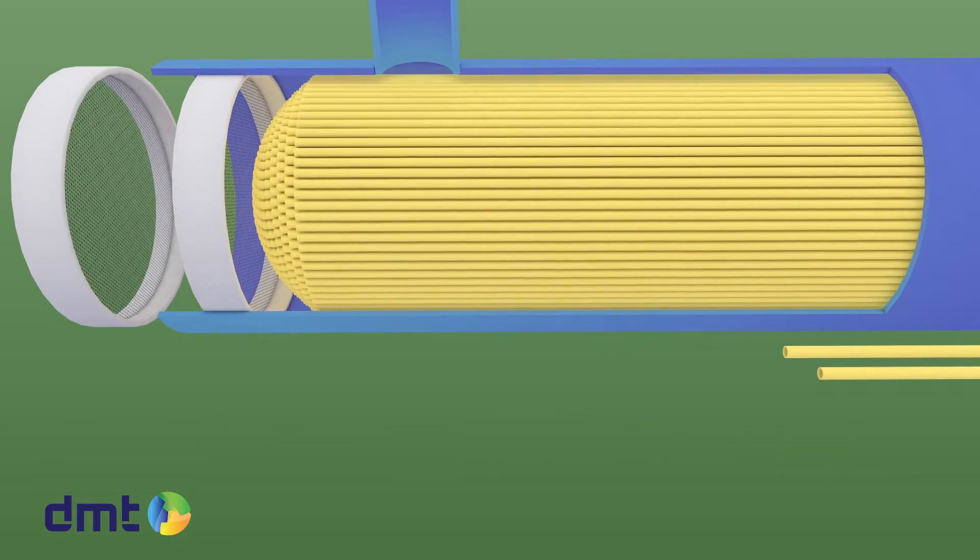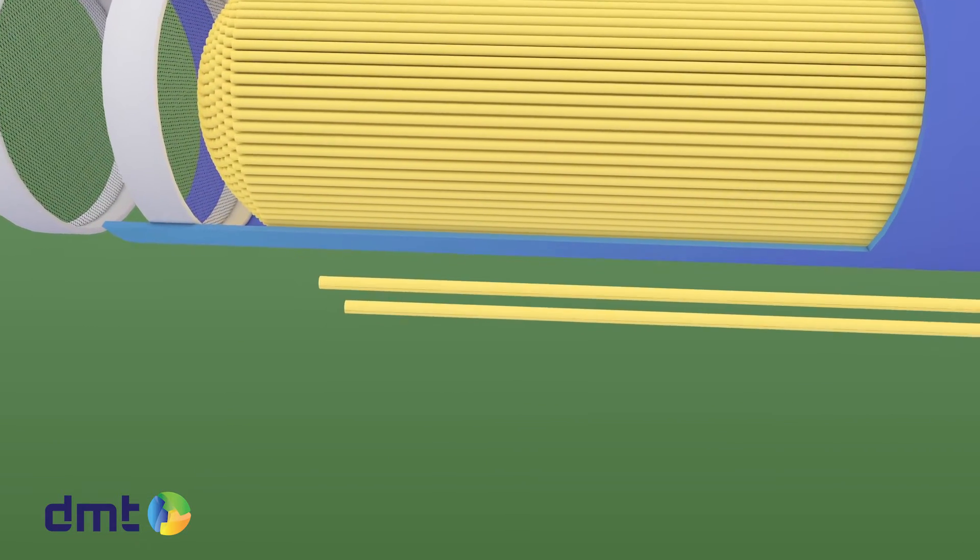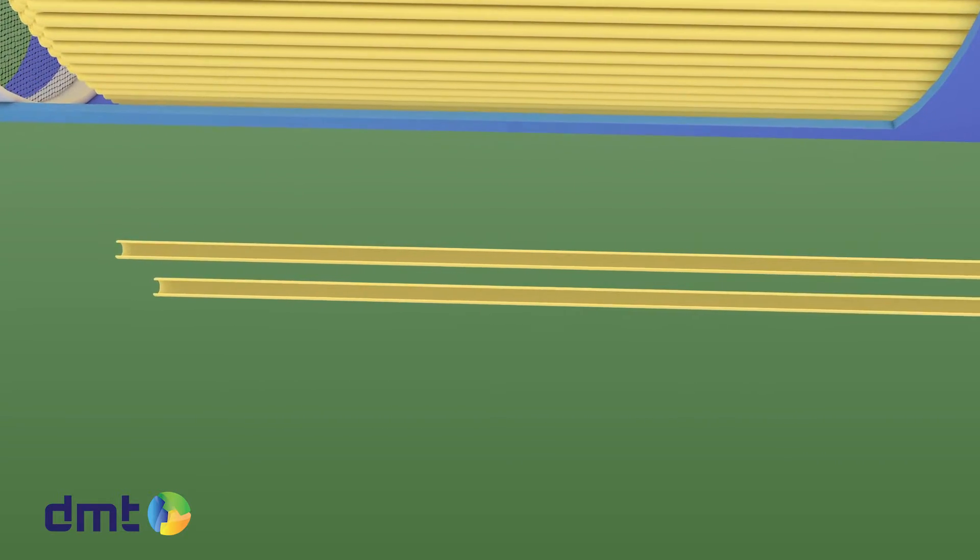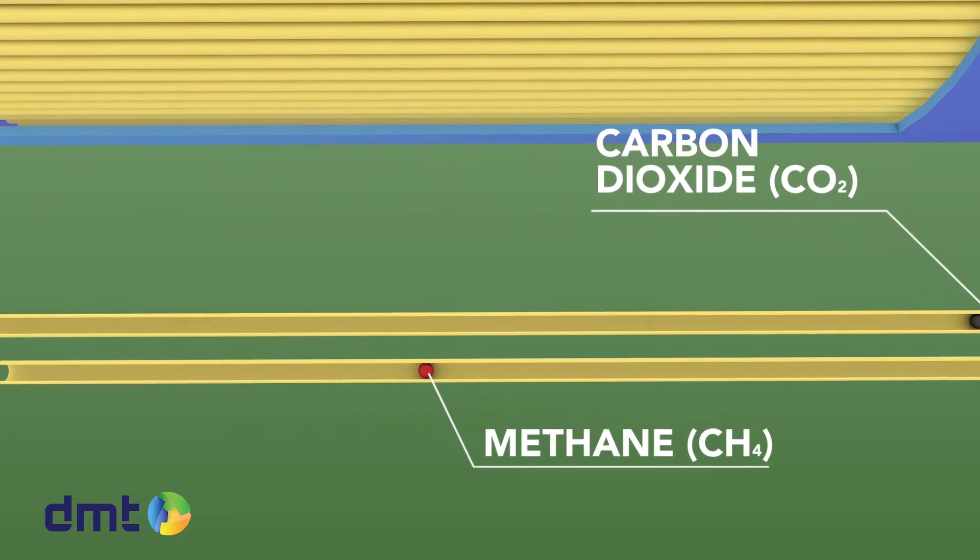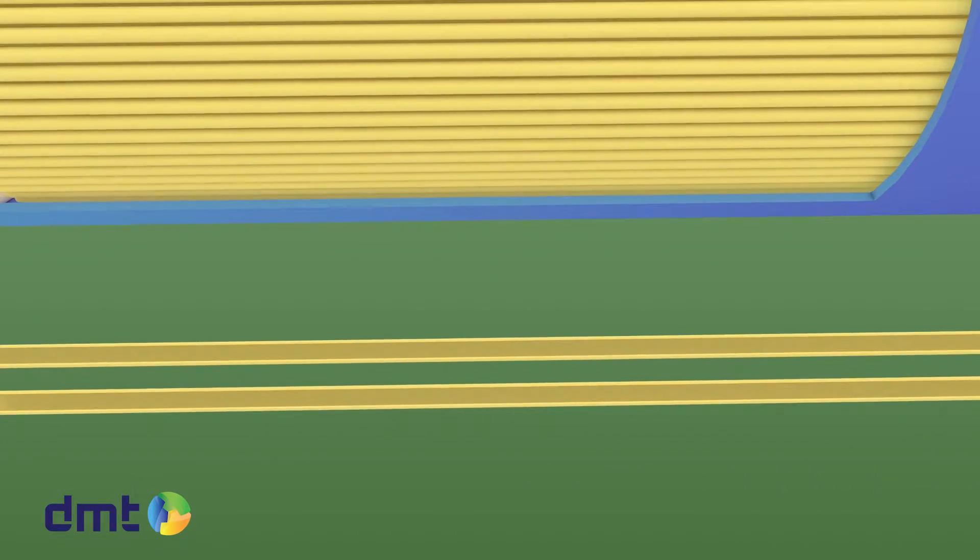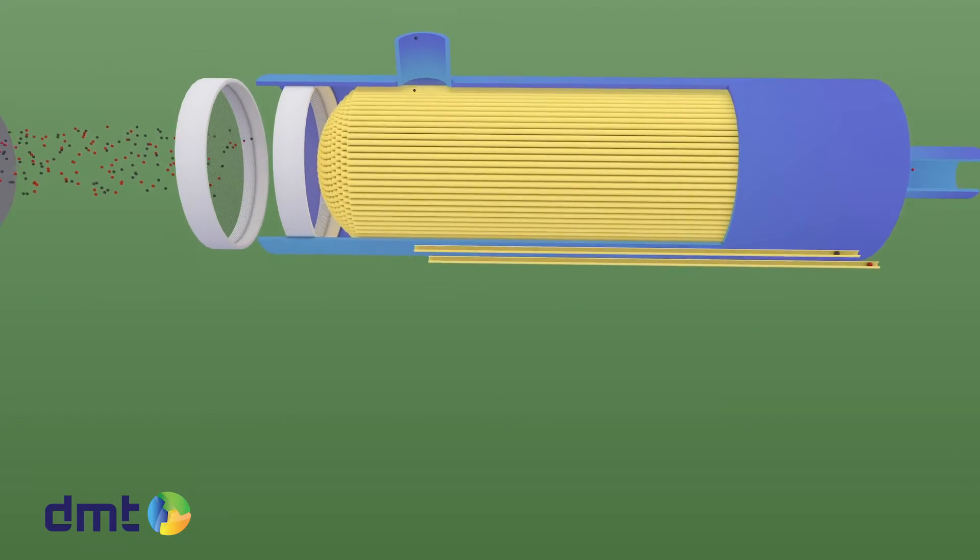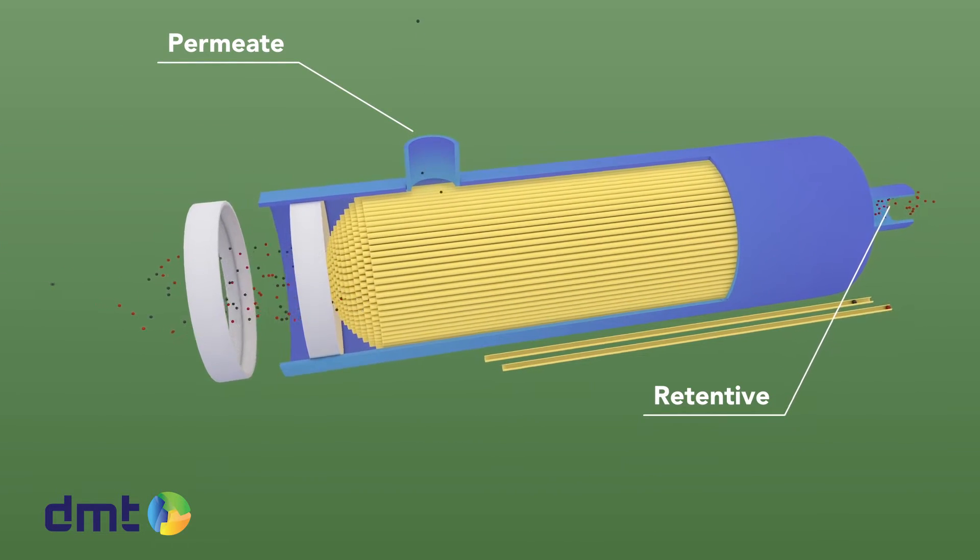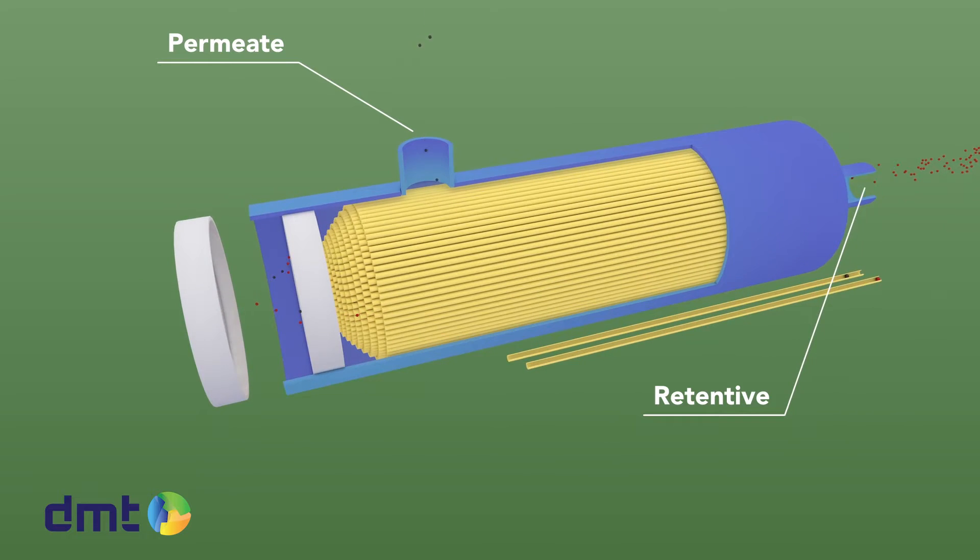The separation of methane and carbon dioxide occurs because of the difference in solubility. The molecular structure of carbon dioxide allows its molecules to pass through the polymer material faster than methane. The separation results in a carbon dioxide-rich stream at the permeate side of the membrane and a methane-rich stream at the retentive side of the membrane.